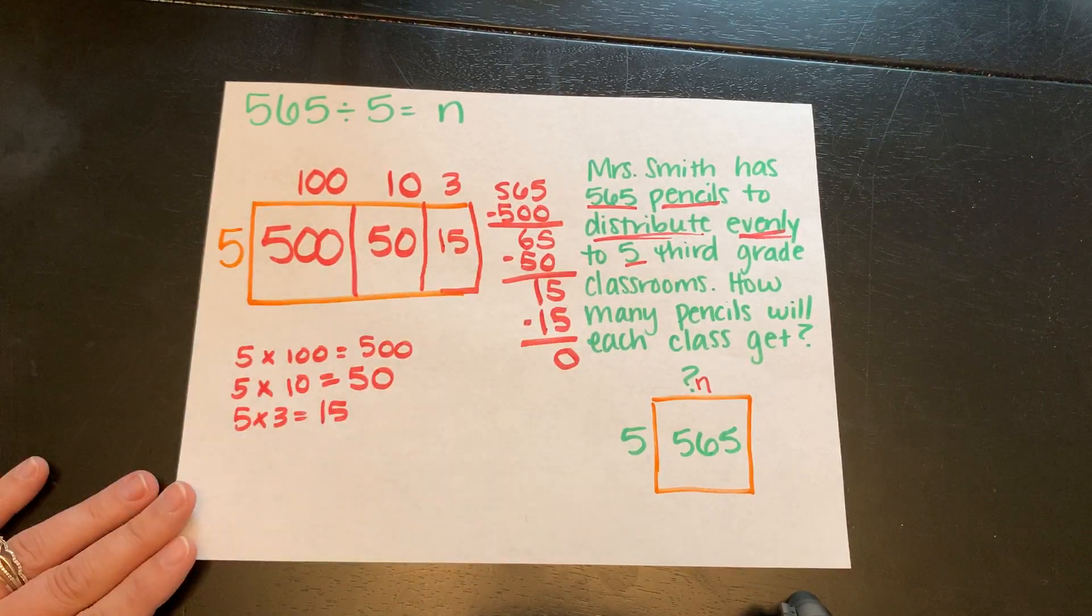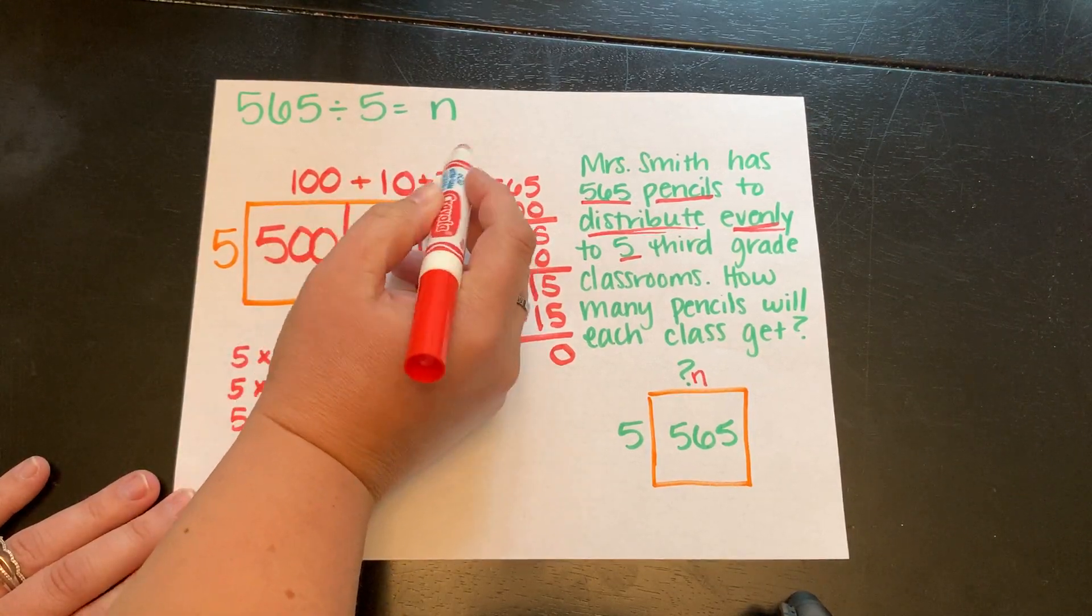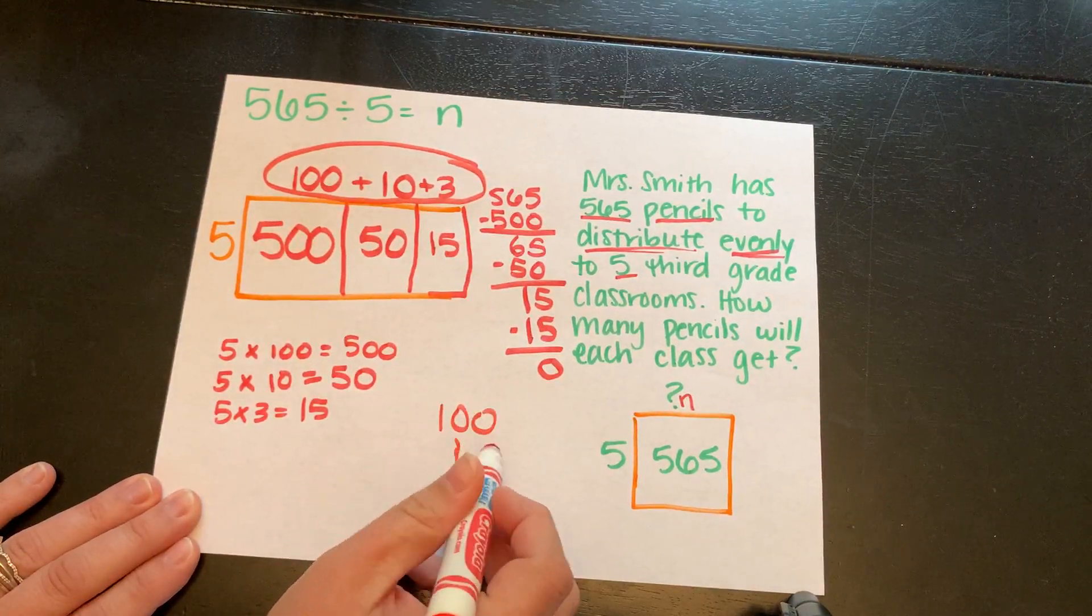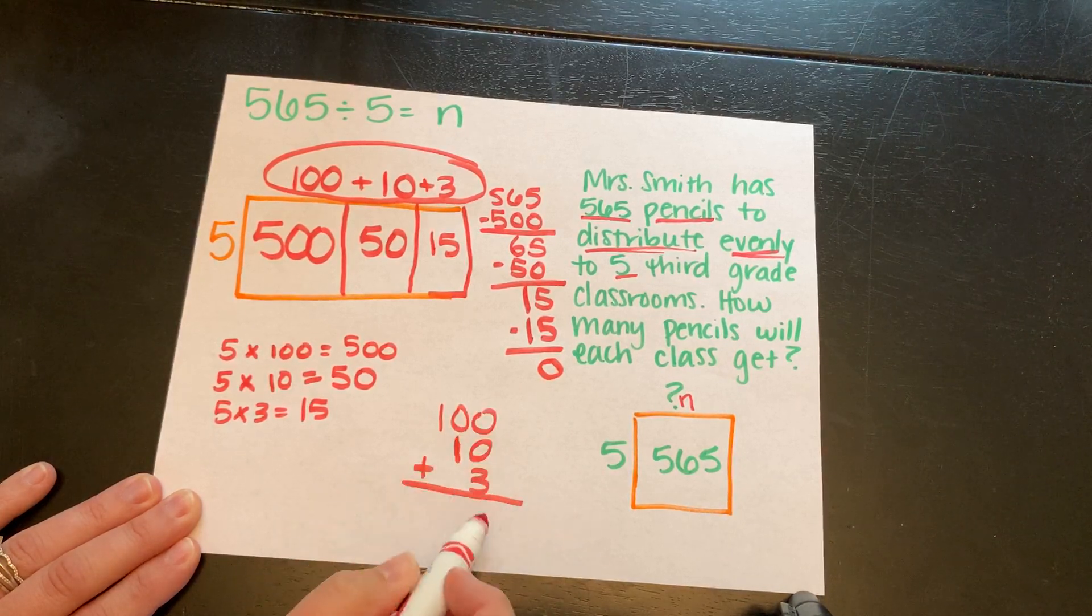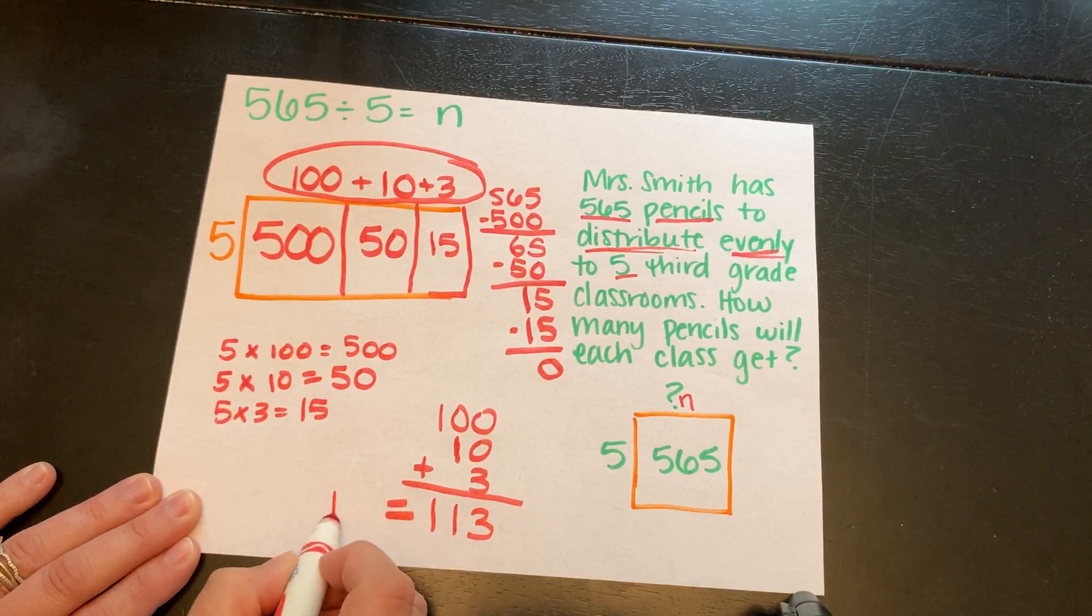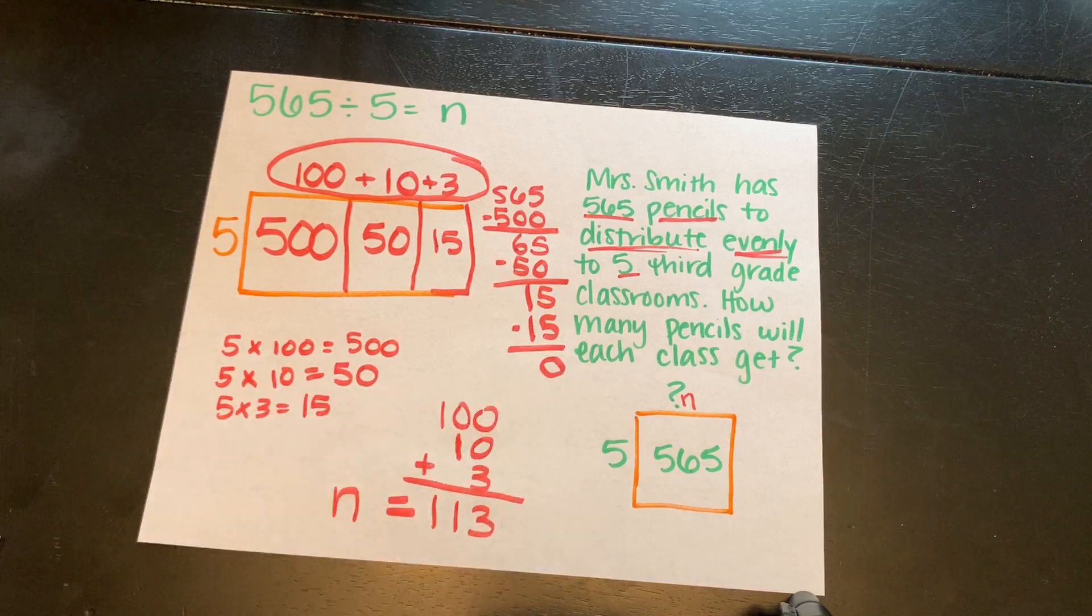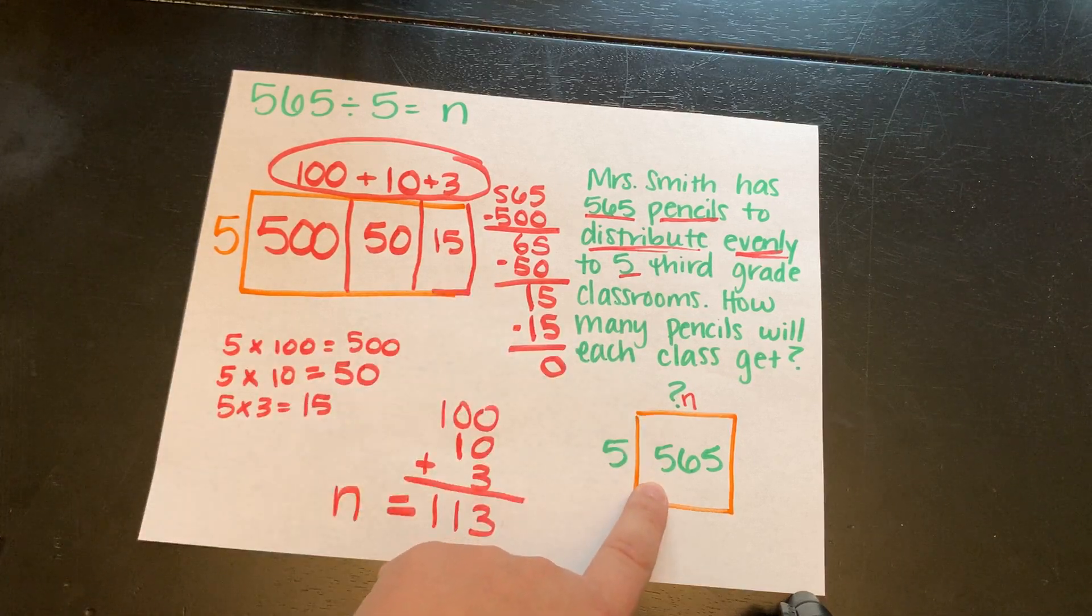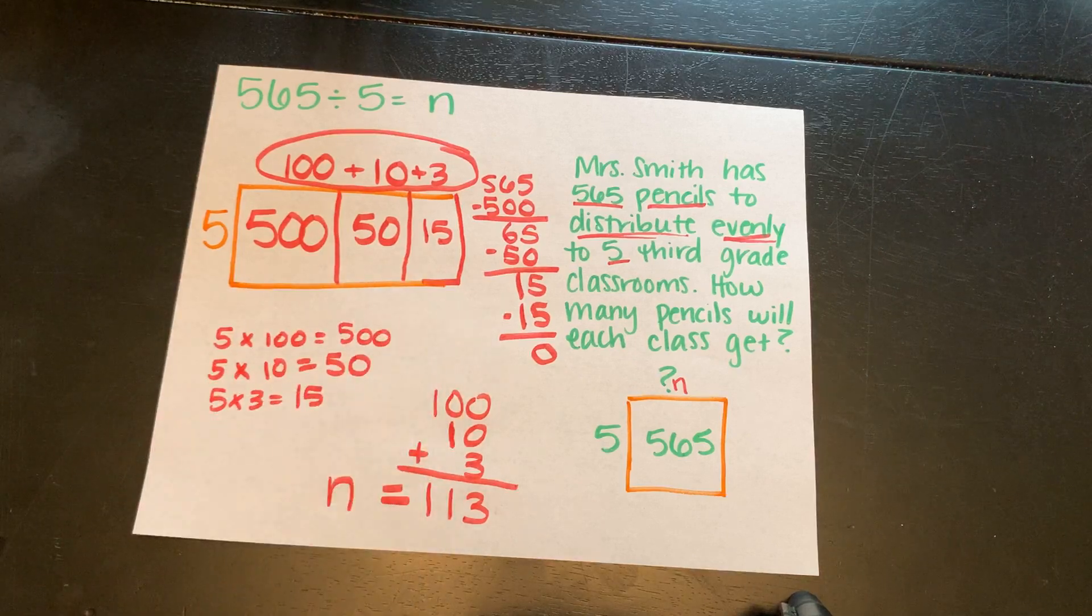To find my quotient for the entire problem, I'm going to add up these partial quotients up top. So that was 100 plus 10 plus 3. Making sure I line up my place values. So our final quotient, N equals 113. That's our final quotient. Make sure, double check your work. The inside of your array should equal up to 565, your total amount that you started with. If it does not, then we've messed up somewhere.